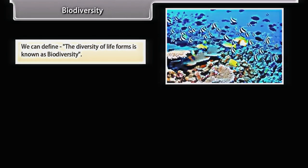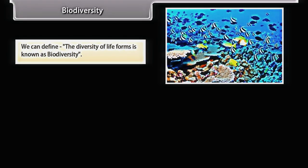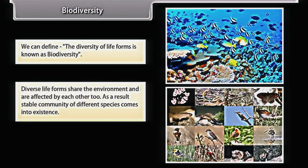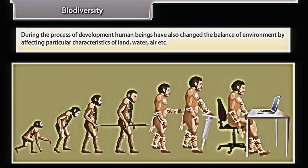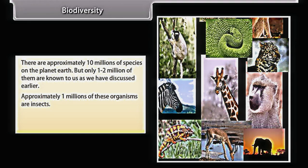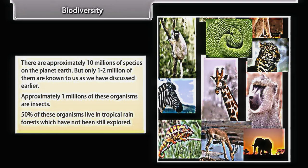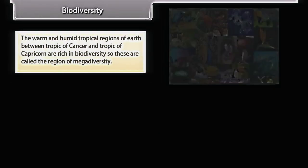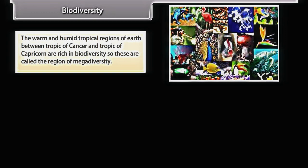The diversity of life forms is known as biodiversity. Diverse life forms share the environment and are affected by each other, resulting in a stable community of different species. There are approximately 10 million species on planet Earth, but only 1–2 million are known to us. Approximately 1 million of these organisms are insects. 50% of these organisms live in tropical rainforests. The warm and humid tropical regions between the Tropic of Cancer and Tropic of Capricorn are rich in biodiversity, so these are called the region of megadiversity.